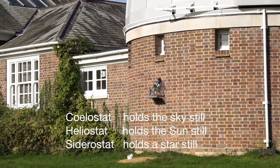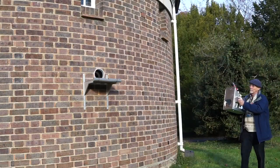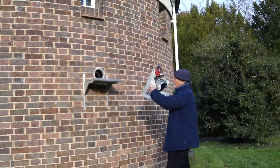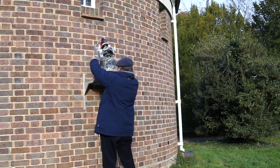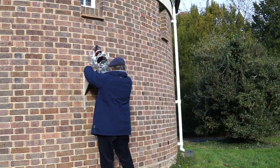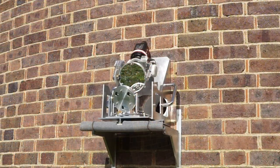Alternative names for a celostat are heliostat or siderostat. The celostat stands on a bracket and shines a beam of light through a hole in the wall into the room inside.